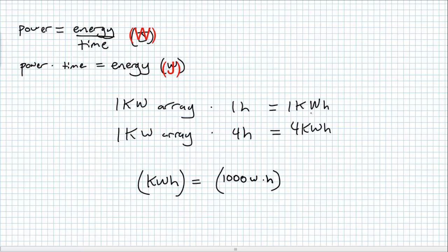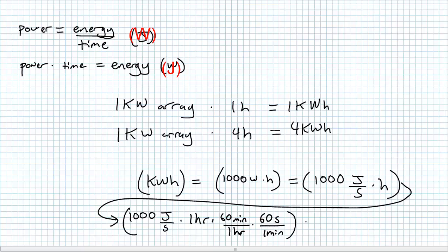If we take away the K, we get 1,000 watt hours. If we realize that a watt is a joule per second, we get 1,000 joules per second times hours. If we convert hours to seconds, we realize that one hour is 3,600 seconds.